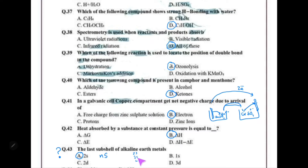Also, 3s could be accompanied by 3p or 3d; 4s could have 4p, 4d, or 4f. So this question provides limited information. The last sub-shell of alkaline earth metals — we select 2s since 1s is not applicable here. Beryllium has 2s as its last sub-shell. This was question 43.